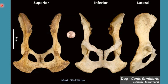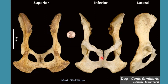The cranial ramus extends from the body of pubis to the ilium and finally enters into the formation of the acetabulum. The caudal ramus fuses with the ischial ramus at its middle point to form the pelvic symphysis.